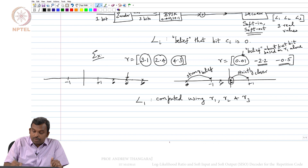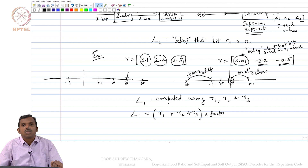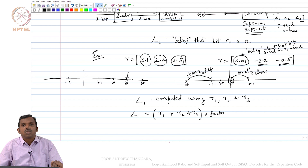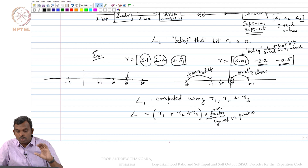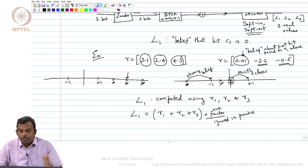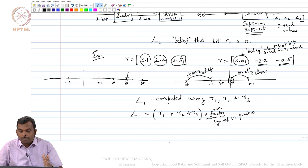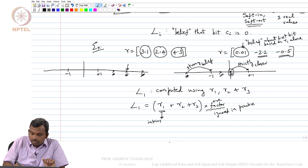That scaling factor is theoretically relevant but in practice people just ignore it. So you can say L1 = R1 + R2 + R3. This is the total belief about the first bit based on all three received values. Looking at it, it has two components: R1 is the intrinsic part — the direct channel observation for that symbol — and R2, R3 are the extrinsic parts, what you gain from the other received values. This is an example of a soft-in, soft-out decoder for the repetition code.